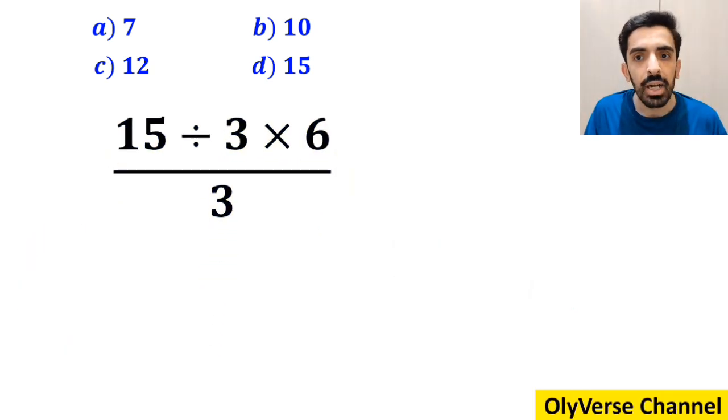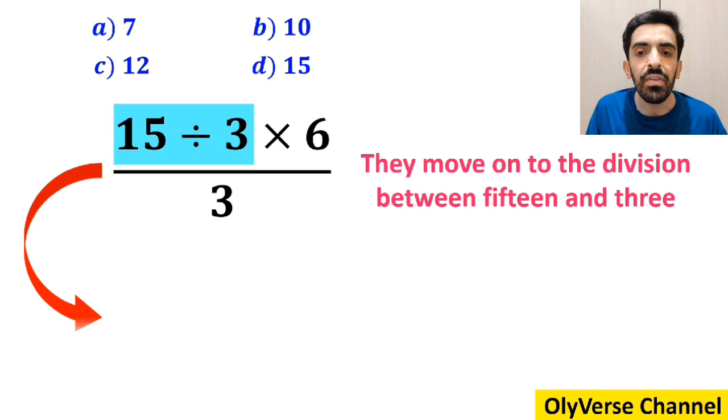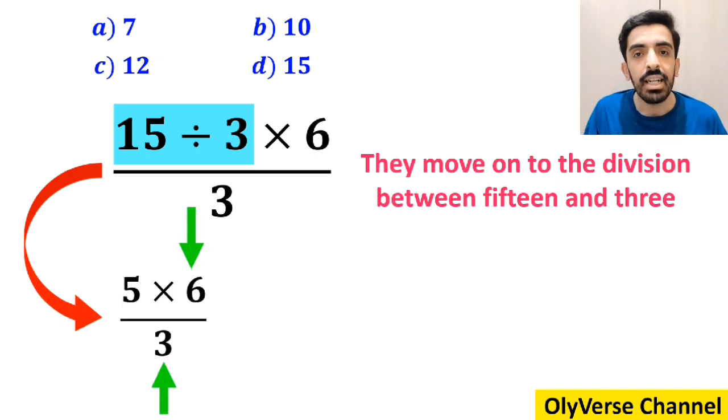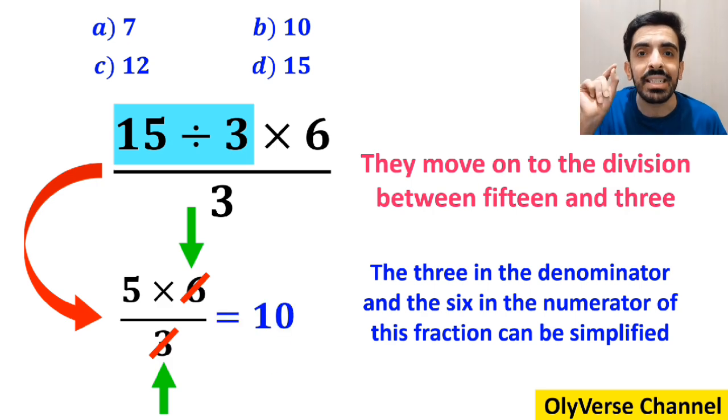In the next step, they move on to the division between 15 and 3 and simplify this expression to 5 multiplied by 6 over 3. Then, they say the 3 in the denominator and the 6 in the numerator of this fraction can be simplified and the final answer will be 10.